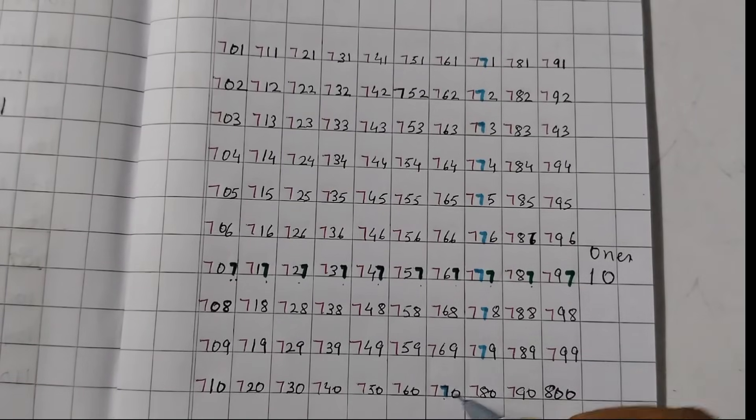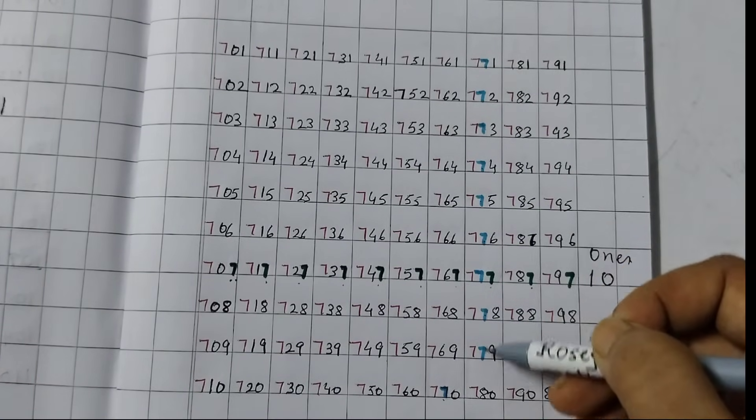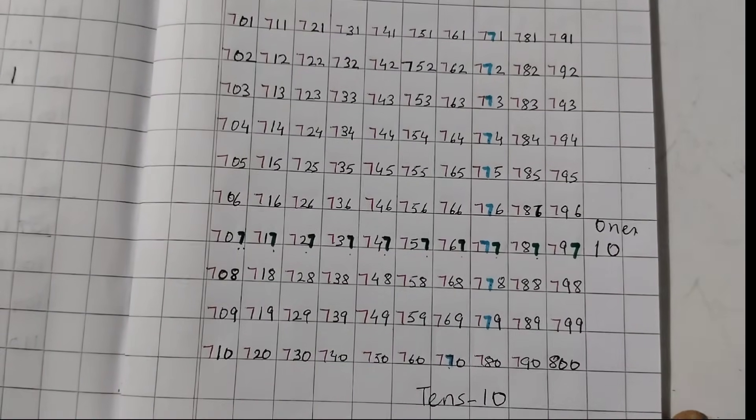Now, the tens place: 1, 2, 3, 4, 5, 6, 7, 8, 9, 10. Again, tens place we have 10. Tens place also we have 10.